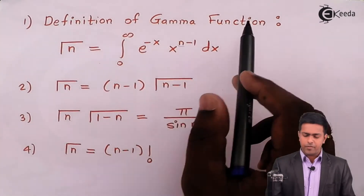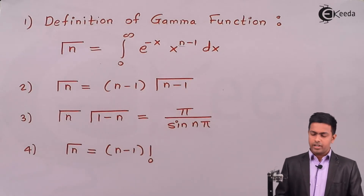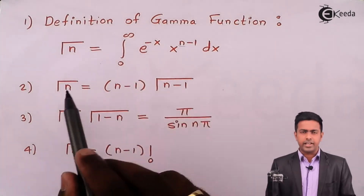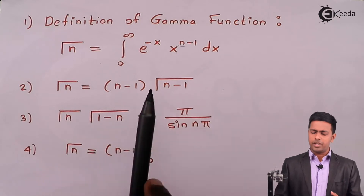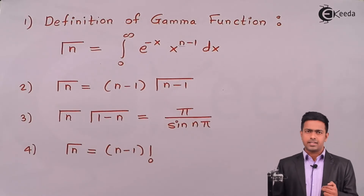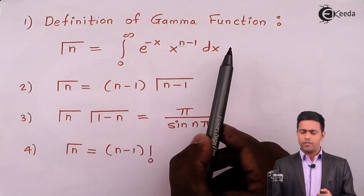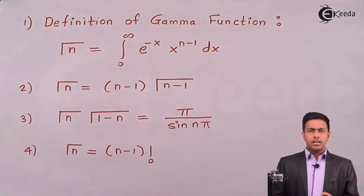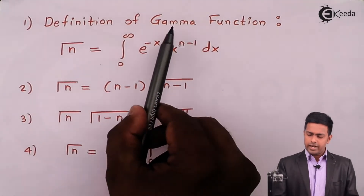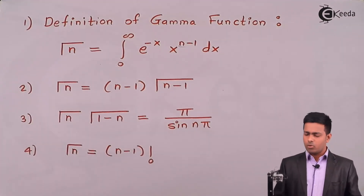As per the definition of the gamma function, Γ(n) = ∫₀^∞ e^(-x) · x^(n-1) dx. This means the integrand must have two functions: one exponential and one algebraic. The power of the exponential function must be -x when integrating with respect to x, or -t for dt, and the other term must be algebraic. If we get such a form, we can say it equals Γ(n).